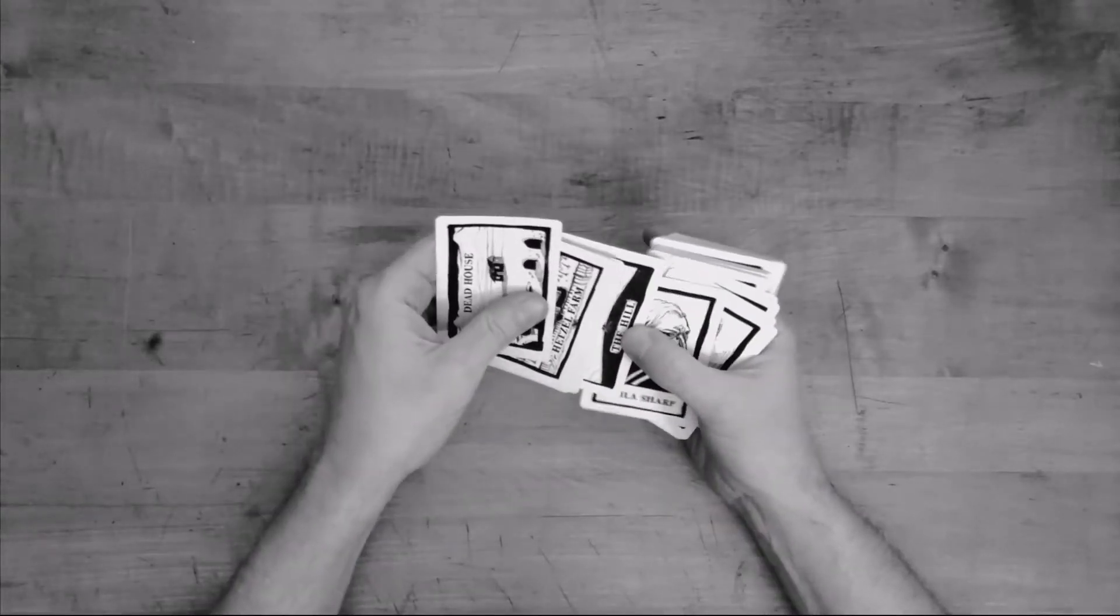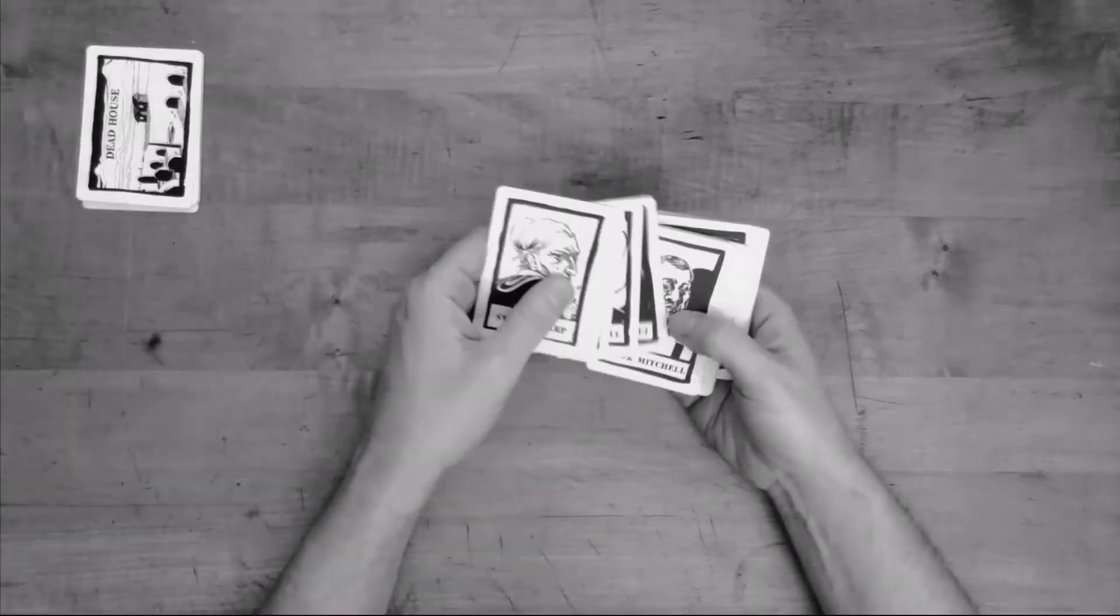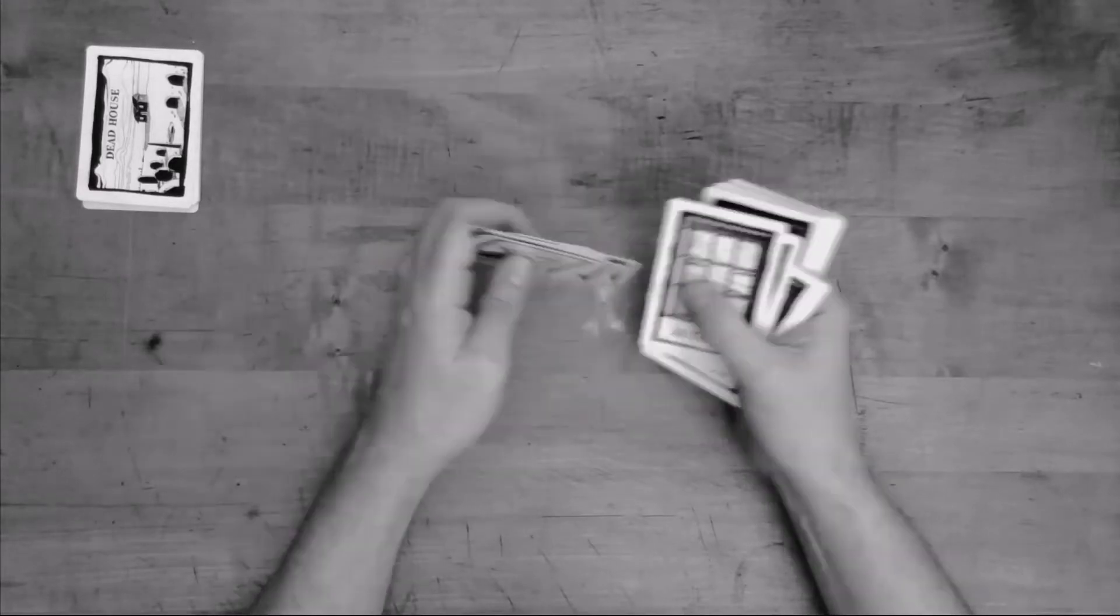There are location cards and those are going to be on the top of the deck. Put those to one side. There are people cards and those will be underneath the locations. We'll put them to the side.